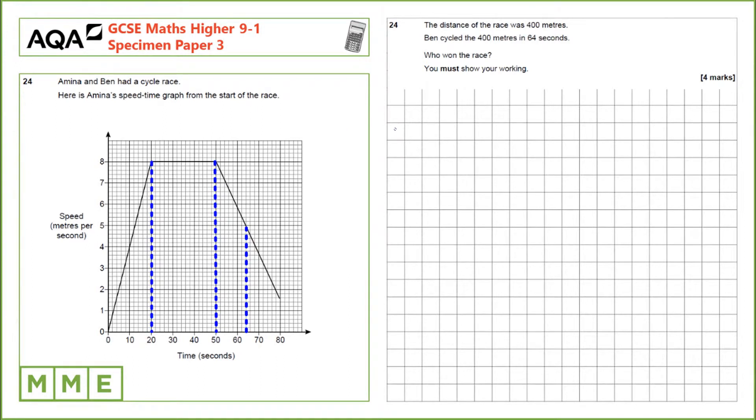Question 24. Amina and Ben had a cycle race. Here is Amina's speed time graph from the start of the race. The distance of the race was 400 metres and Ben cycled the 400 metres in 64 seconds. Who won the race?